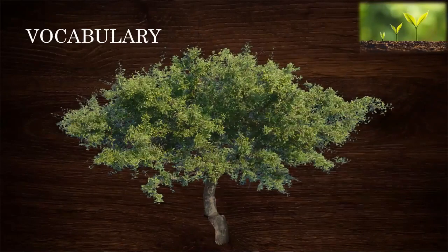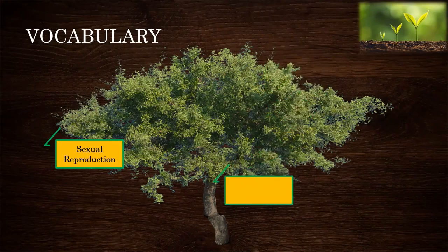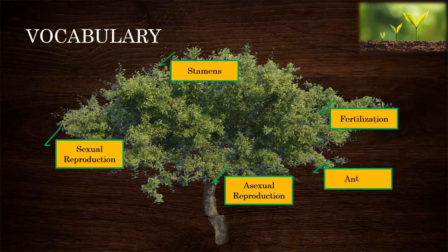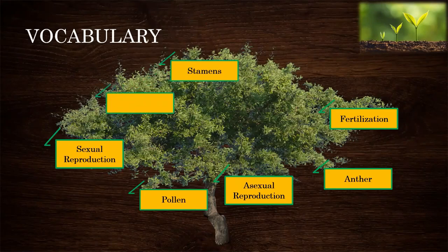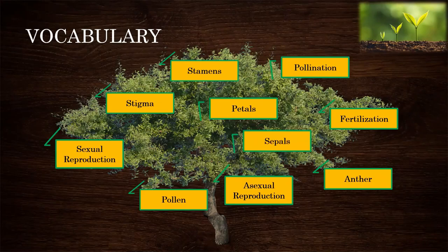Before we proceed, let's look at some key words we'll encounter in this lesson: sexual reproduction, asexual reproduction, fertilization, anther, pollen, stigma, pollination, petals, and sepals. These are the words that we are going to encounter in this lesson. Stay tuned.